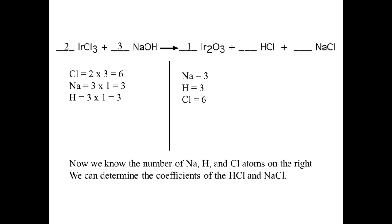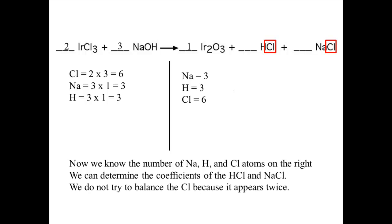We need to figure out the coefficients for HCl and NaCl. Chlorine appears in both of them, which would make it difficult to figure out the number to use for either one. Because chlorine appears in both, we do not try to use it to find the coefficients unless we have to — and here we do not. So we will ignore the chlorine for now. There are three sodium atoms in the products, so there needs to be a 3 as the coefficient for sodium chloride. Similarly, there are three hydrogen atoms in the products, so there needs to be a 3 as the coefficient for HCl.